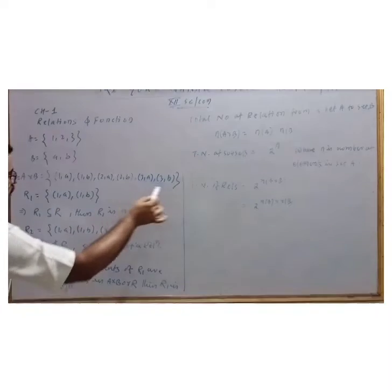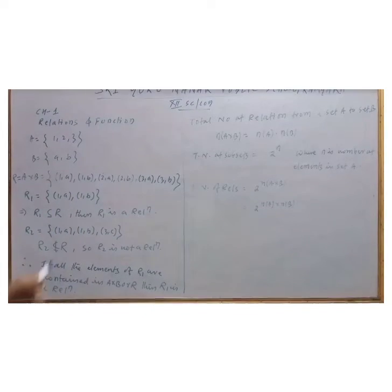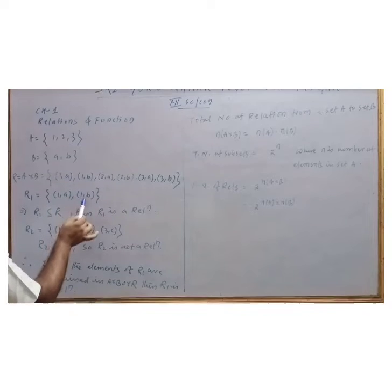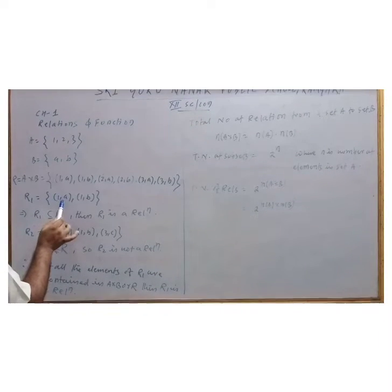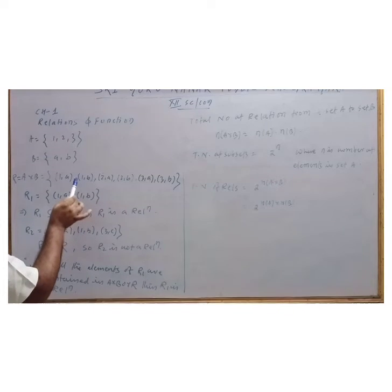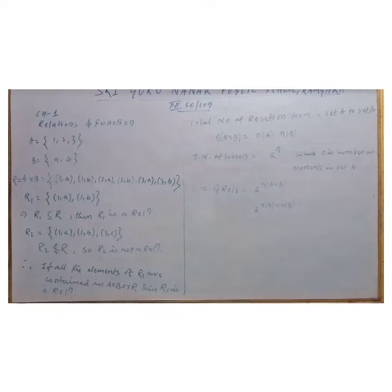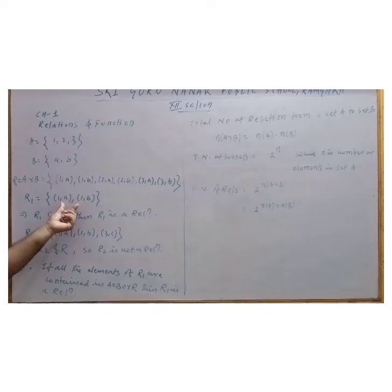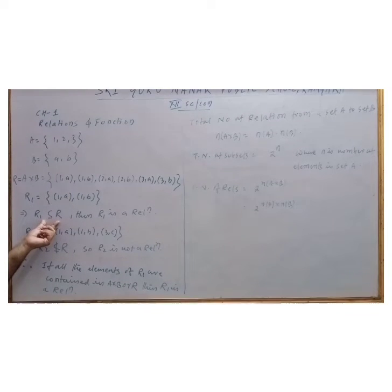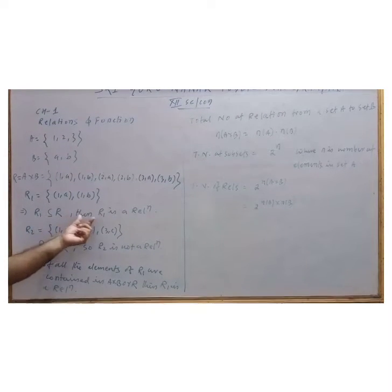Out of these six ordered pairs, we take any. So I choose (1,a) and (1,b) - this is R1. Now see, all the elements of R1 are there in R or not? Yes, all the elements of this R1 are there in R. So if all the elements of R1 are there in R, we call it a subset. Then R1 is a relation.